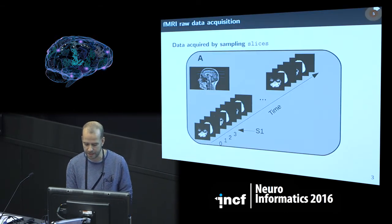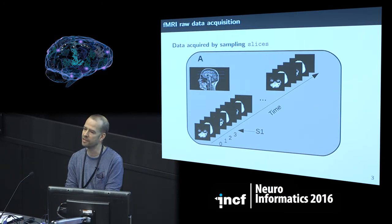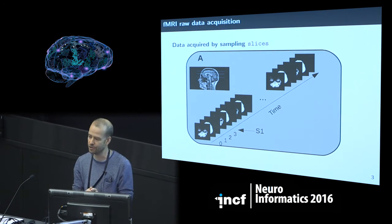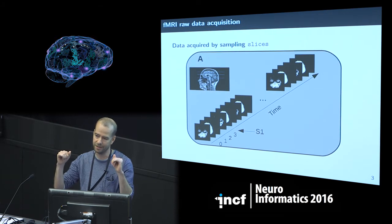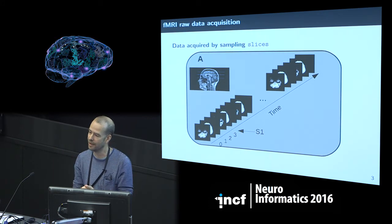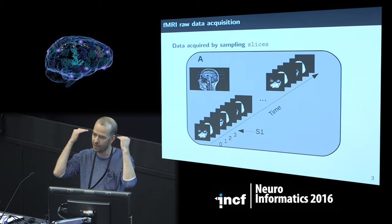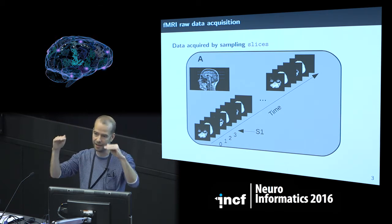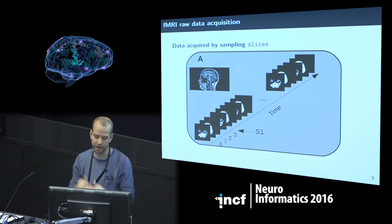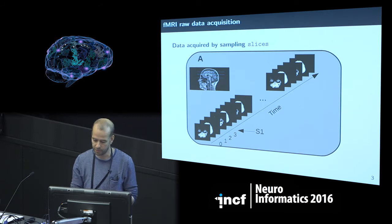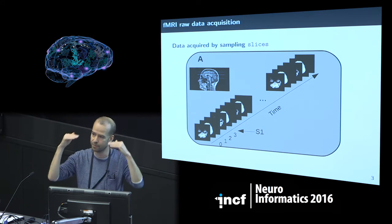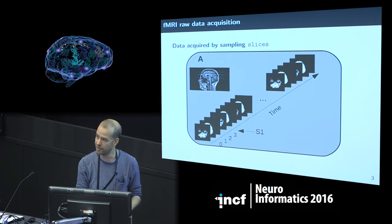A key part of fMRI data acquisition is that the data is collected in terms of slices. At each point in time during an fMRI experiment, the machine is sampling just a small part of the brain — sequentially or in some other form. For example, if you have a brain with just three slices, you would first sample one part, then the next, then the next, and then the bottom part again.